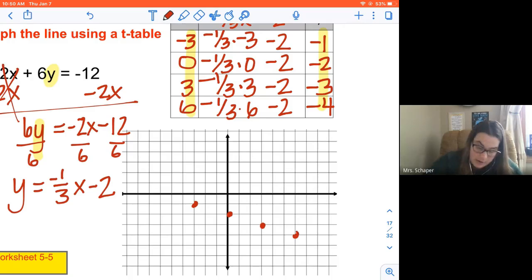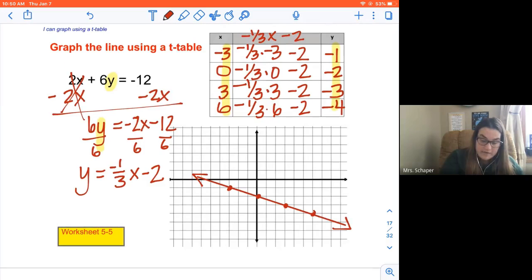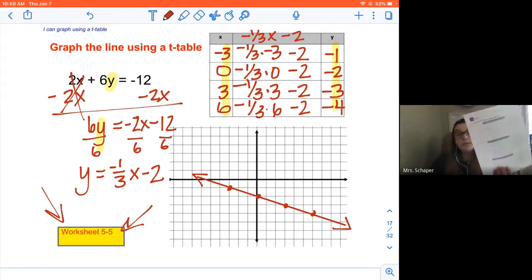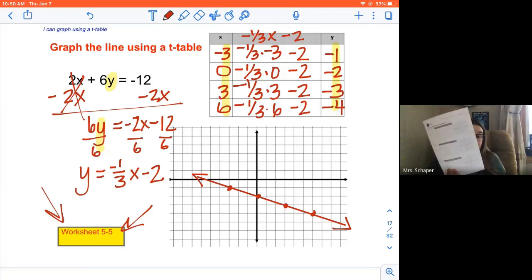Okay, and then I'm going to go ahead and draw my line. If I hold my pen down, it'll straighten it for me. Arrows on the end. All right, so you're going to be graphing using a t-table. You're going to be working on worksheet 5.5. Make sure that all graphs are done on graph paper. And on the worksheet, there actually are graphs already, so you're welcome just to use those if you want to.